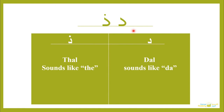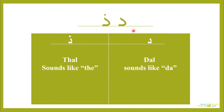The letters we are studying today are the دال and the ذال. They are called Dal and Dhal. However, phonetically they sound like 'D' and 'Dh', as in 'TH' in the words 'this' and 'that'.